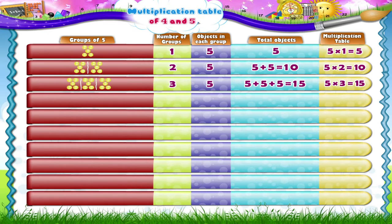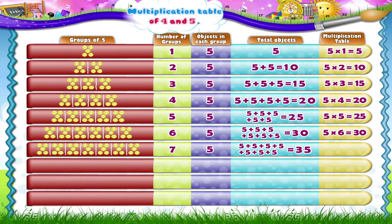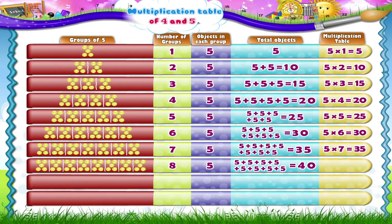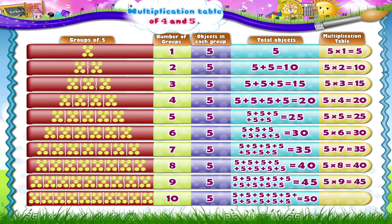Let us now count five beads at a time. Four groups of five beads make a total of twenty beads. Five groups of five beads make a total of twenty-five beads. Six groups of five beads make a total of thirty beads. Seven groups of five beads make a total of thirty-five beads. Eight groups of five beads make a total of forty beads. Nine groups of five beads make a total of forty-five beads. Ten groups of five beads make a total of fifty beads.